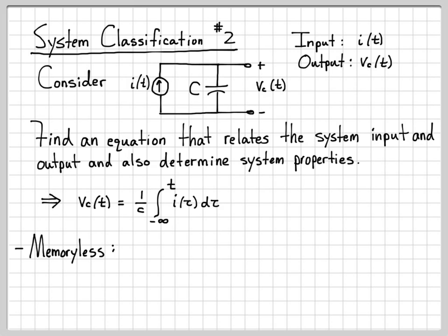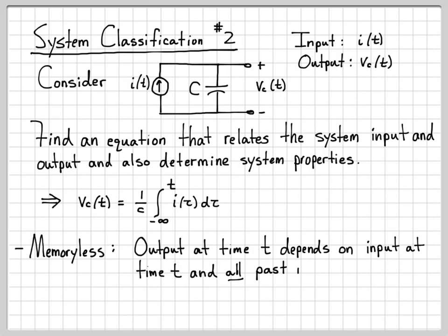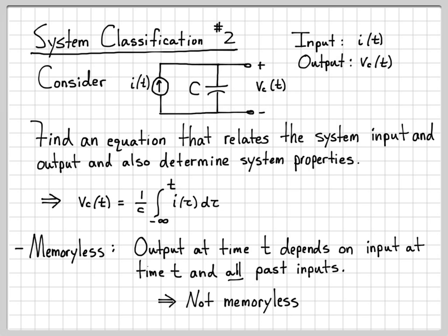The first property we'll talk about is memoryless. A memoryless system has an output at time t that depends only on the input at time t. If we look at our equation, the output at time t depends on the input at time t because we integrate up to time t, but also on all past inputs — this integral integrates all inputs for all time. So since this system depends on all previous times, this is not a memoryless system. Any circuit with a capacitor or inductor will typically reach the same conclusion.